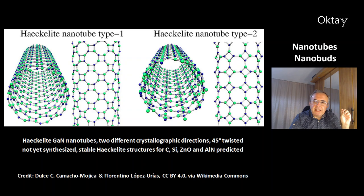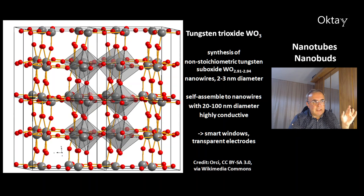This is a picture of haeckelite, for example gallium nitride nanotubes. There are two different types, type 1 and type 2. The difference is in the squares. Type 2 has squares twisted by 45 degrees. These compounds are not yet synthesized. However, according to theoretical predictions, there should be stable haeckelite structures for carbon, silicon, zinc oxide and aluminum nitride.